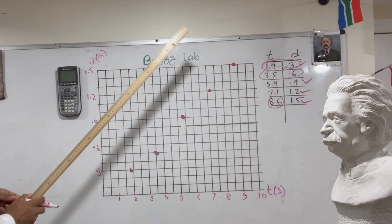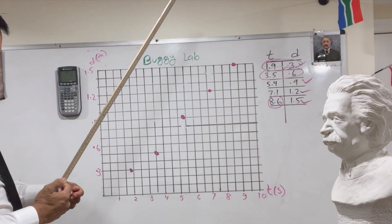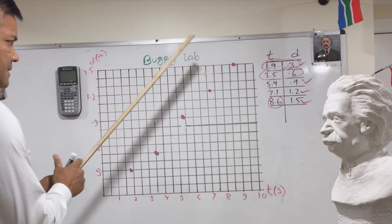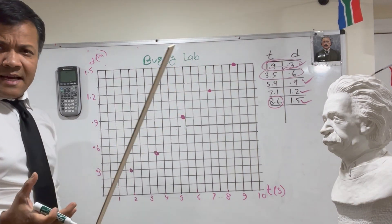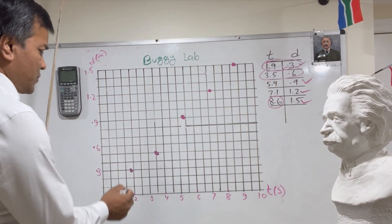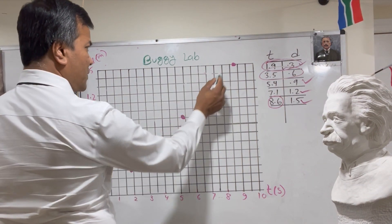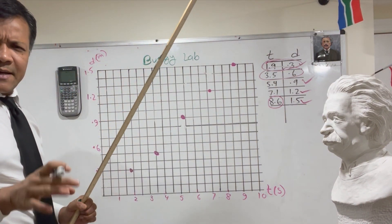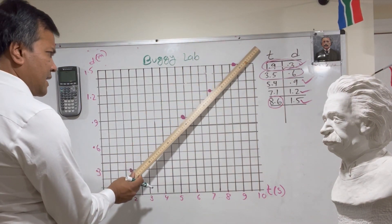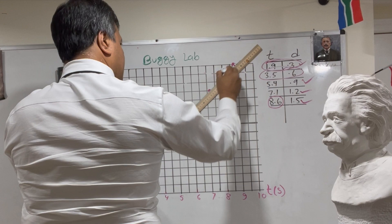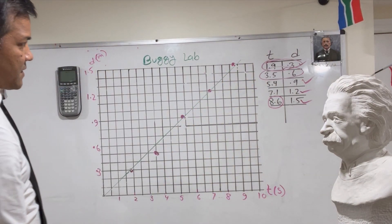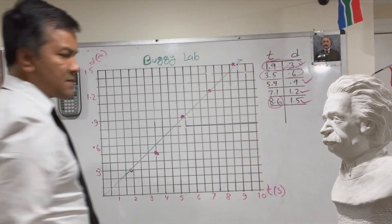We're going to use the ruler to draw the best-fit line. The best-fit line has 50% of the data below and 50% above. We have 5 points, so we want 2 points below, 2 points above, and the line goes through 1 point. It doesn't look bad.